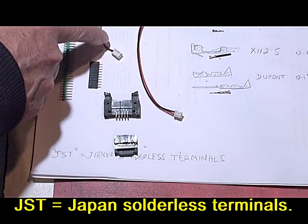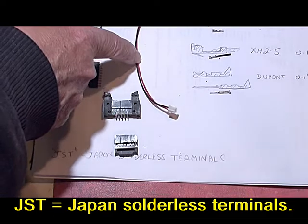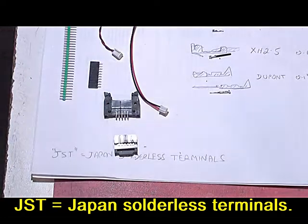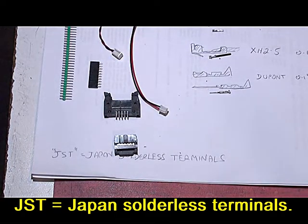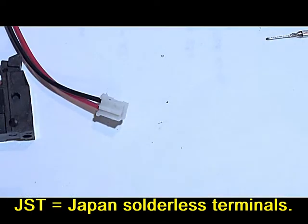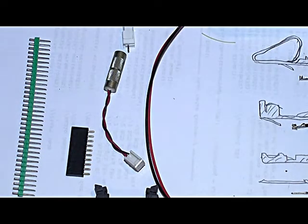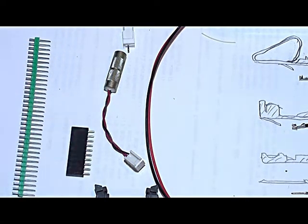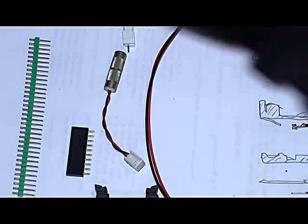Up here we have what's called the JST PH type. It's a smaller version of the XH2.5. Sometimes when you order XH2.5s they might send you those instead which are slightly smaller. It's used a lot in toys and little remote control cars and things like that. There's one used on the end of a little motor which comes out of a mobile phone that makes a shaking noise when the phone rings.